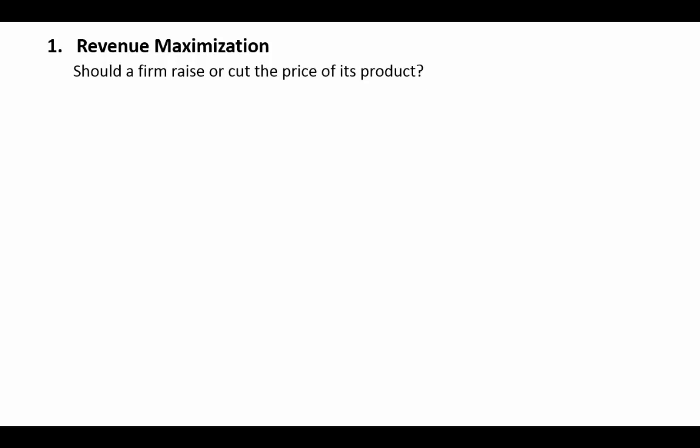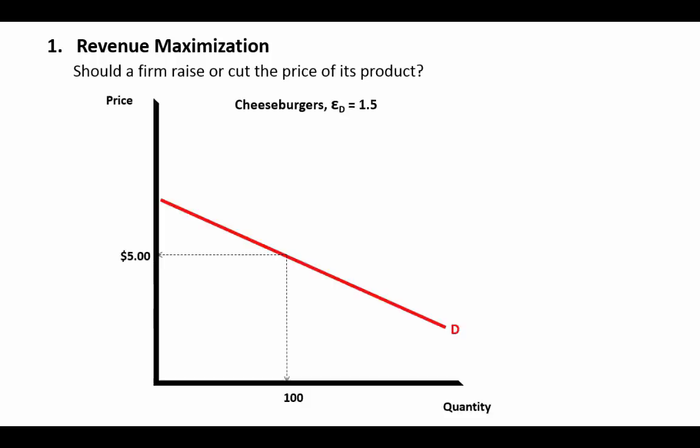Businesses typically want to increase their revenue, although it's not always the case that larger revenue leads to larger profits, but it often is. So we want to know: do we want to raise or cut the price of the product in order to increase revenues? The law of demand indicates that if you cut the price, you'll increase sales, but will you increase revenues? Well, that depends on elasticity — is that increase in quantity more or less than proportional to the decrease in price?